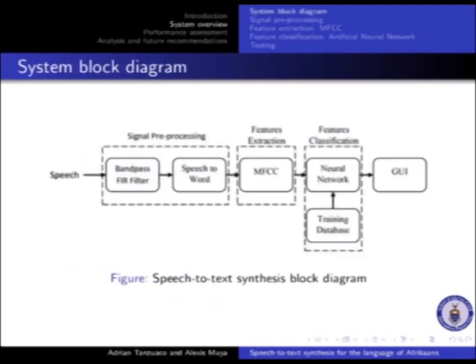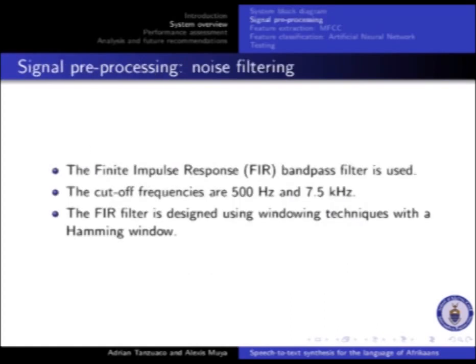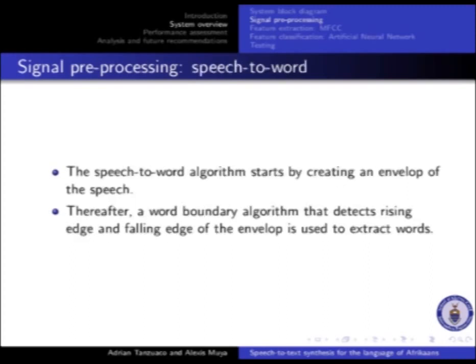System overview. The system comprises the following stages: a signal pre-processing stage, a feature extraction stage, and a feature classification stage. The signal pre-processing starts with noise filtering using a finite impulse response bandpass filter with cut-off frequencies of 500 Hz and 7.5 kHz. The FIR filter is designed using windowing techniques with a Hanning window. The next stage is the speech-to-word algorithm, which creates an envelope of the speech, then uses a word boundary algorithm that detects rising and falling edges of the envelope to extract words.